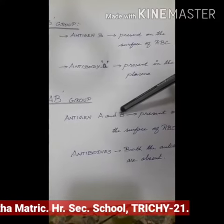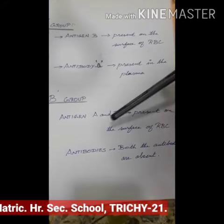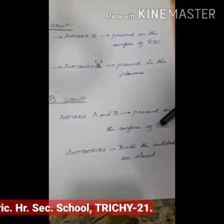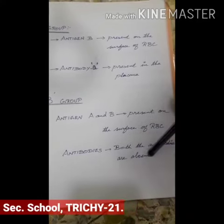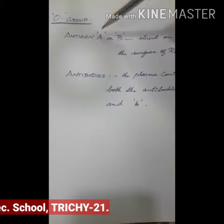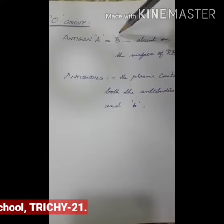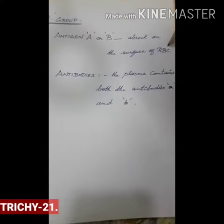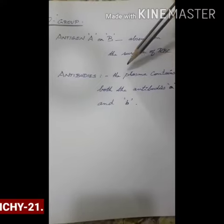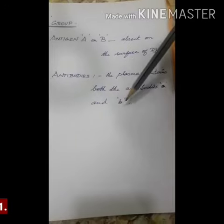AB group: Antigen A and B are both present on the surface of the RBC, and both antibodies are absent. O group: Antigens A and B are absent on the surface of the RBC, and the plasma contains both antibodies A and B.